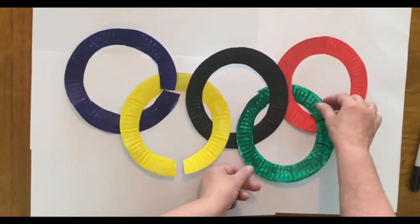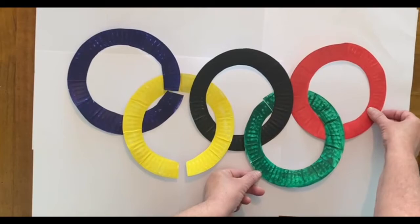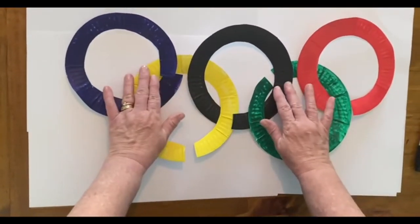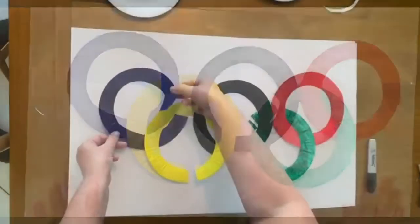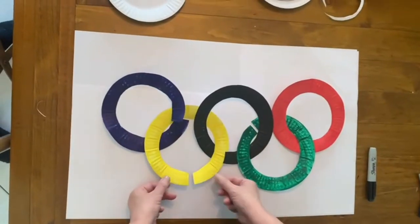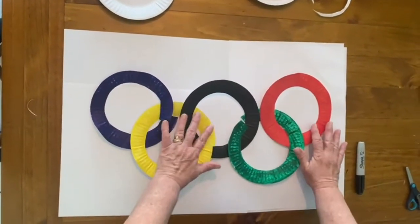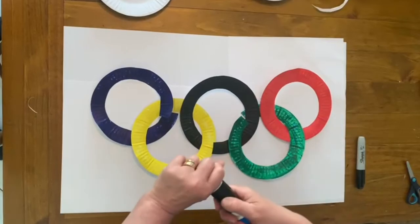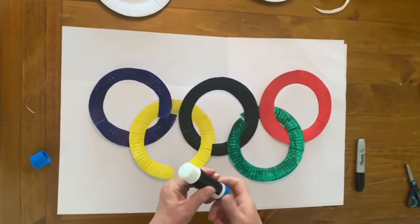When you have a little slit, you can place the rings in the right order, like I have here. Just make sure they're all sitting right.